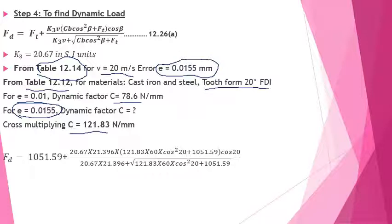Substituting all values — velocity, face width B = 60 mm, helix angle 20°, FT = 1051.59 N, and C = 121.83 N/mm — into equation 12.26a, the dynamic load FD = 6949.79 N.